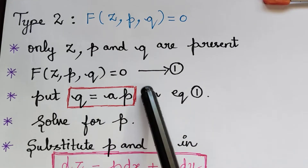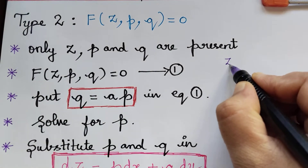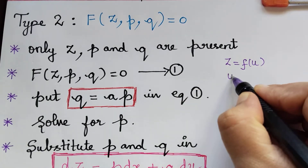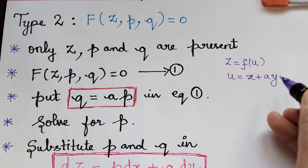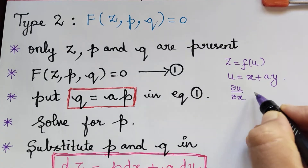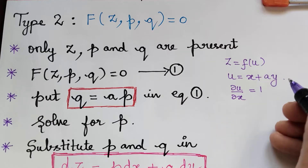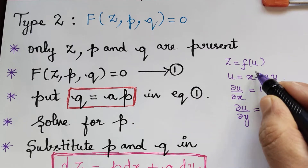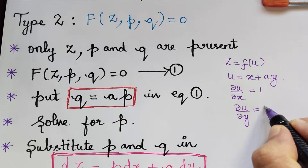How did we obtain q equal to ap? We consider z equal to f of u to be the solution of equation 1, where u is equal to x plus ay. Now, dou u by dou x will be equal to 1, and dou u by dou y — x will be treated as constant — so this will become a into 1, which is a.